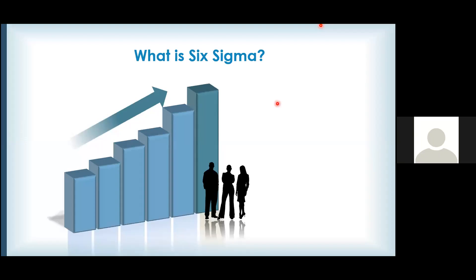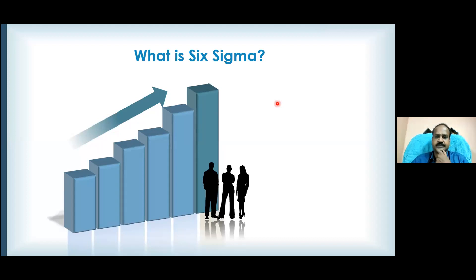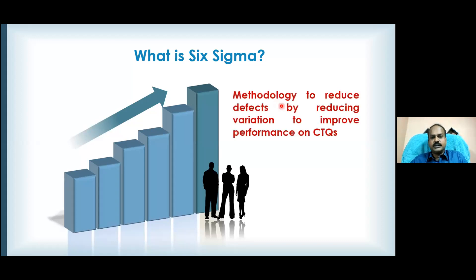To reduce defects, we reduce variations. To reduce variation, we need to understand CTQs — the critical to quality characteristics. These are the numbers that drive customer satisfaction. This could be your product specification, your process parameter, or the input that goes into your process. When you optimize that number, customer satisfaction will improve. Such numbers are called CTQs — critical to quality characteristics.